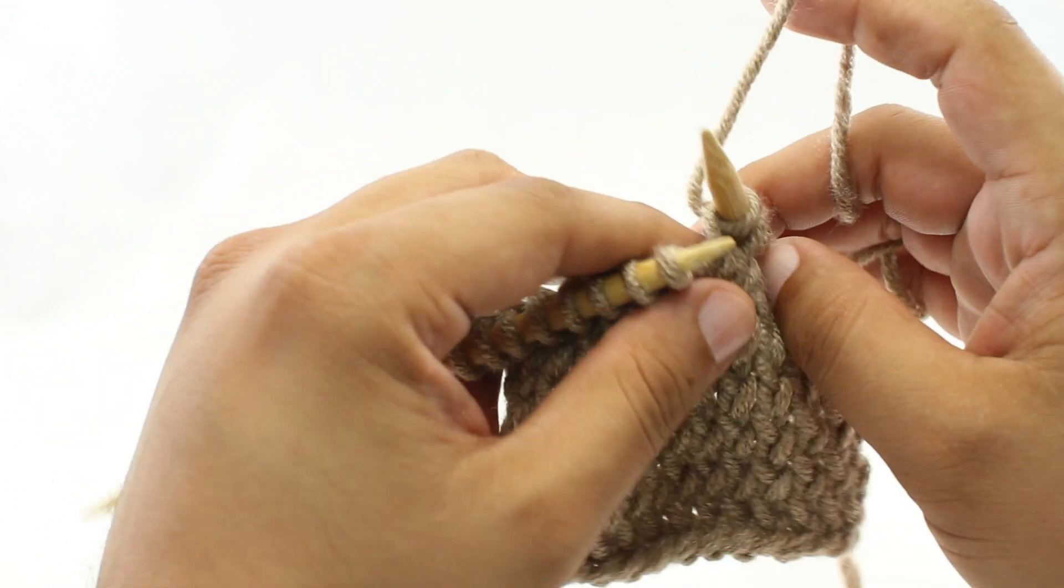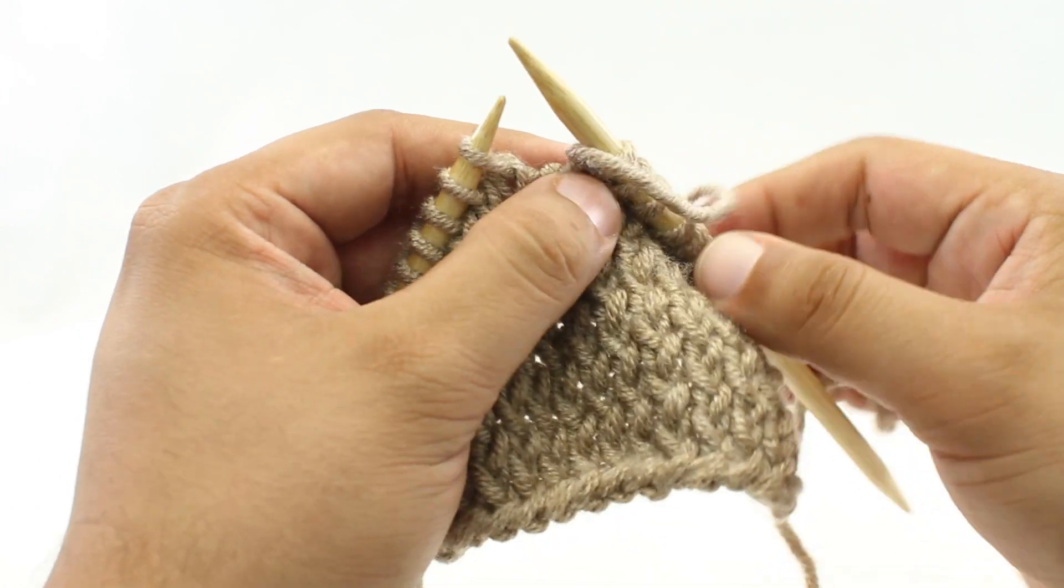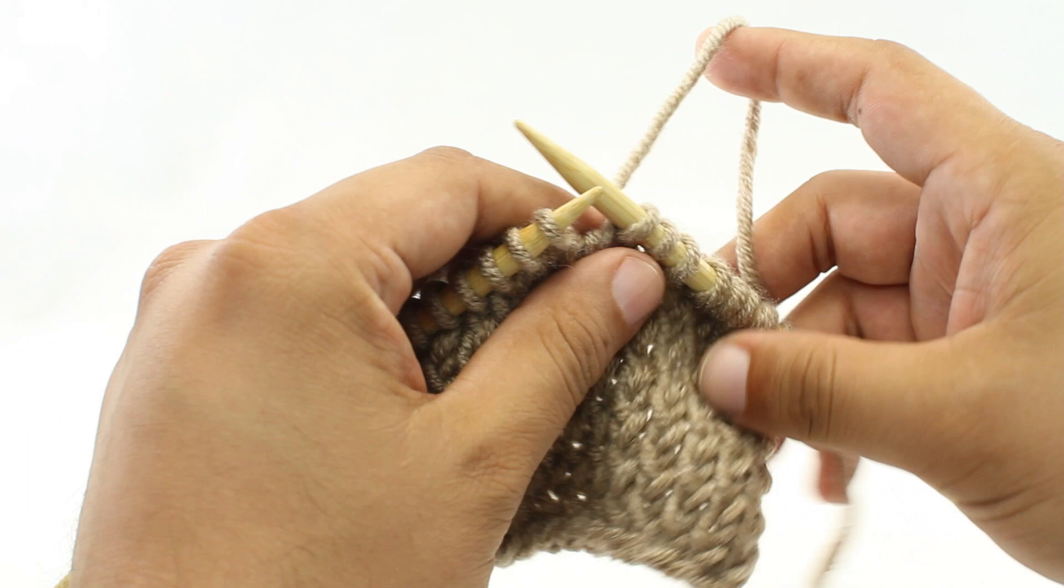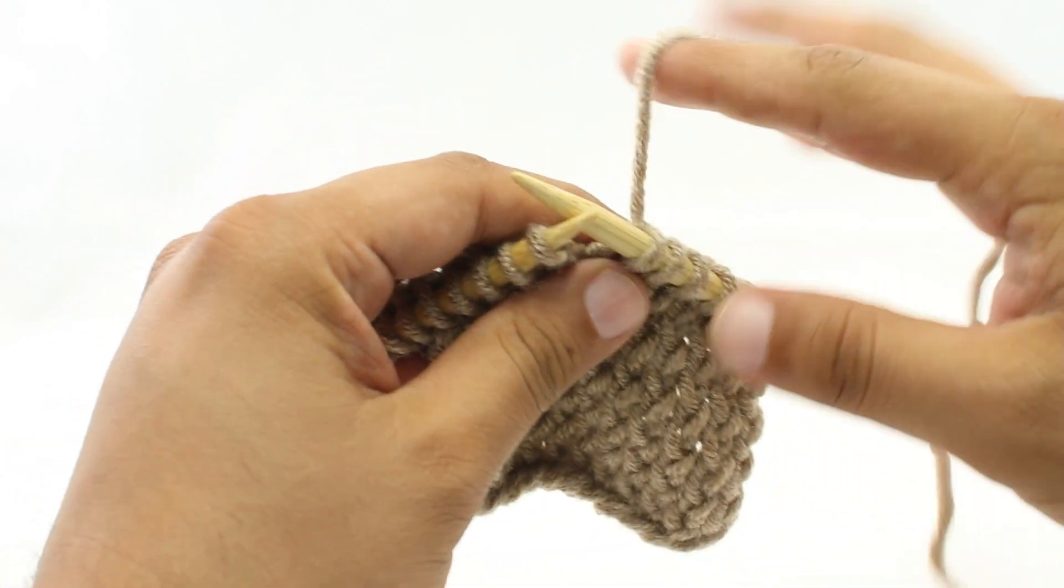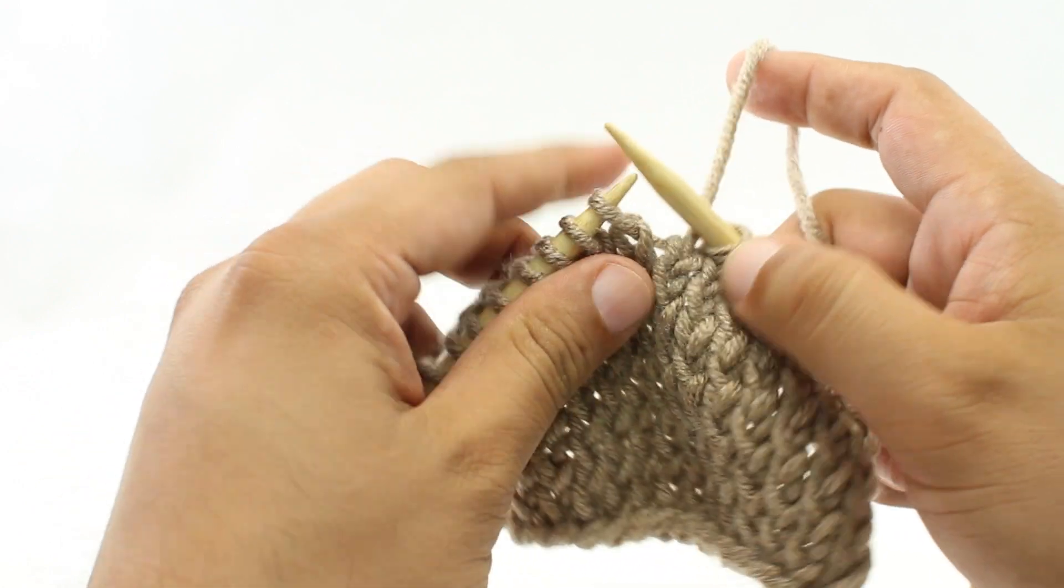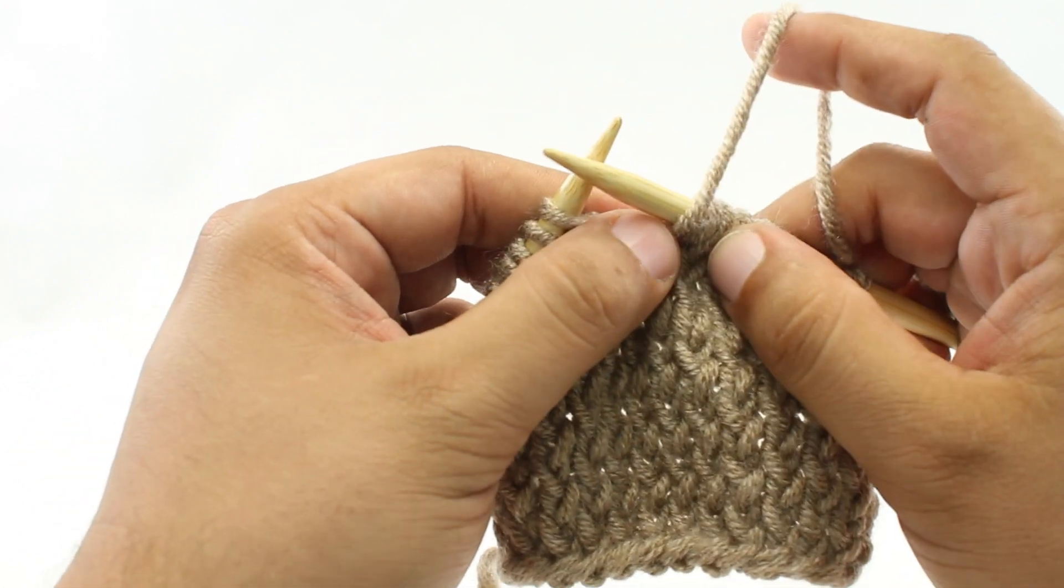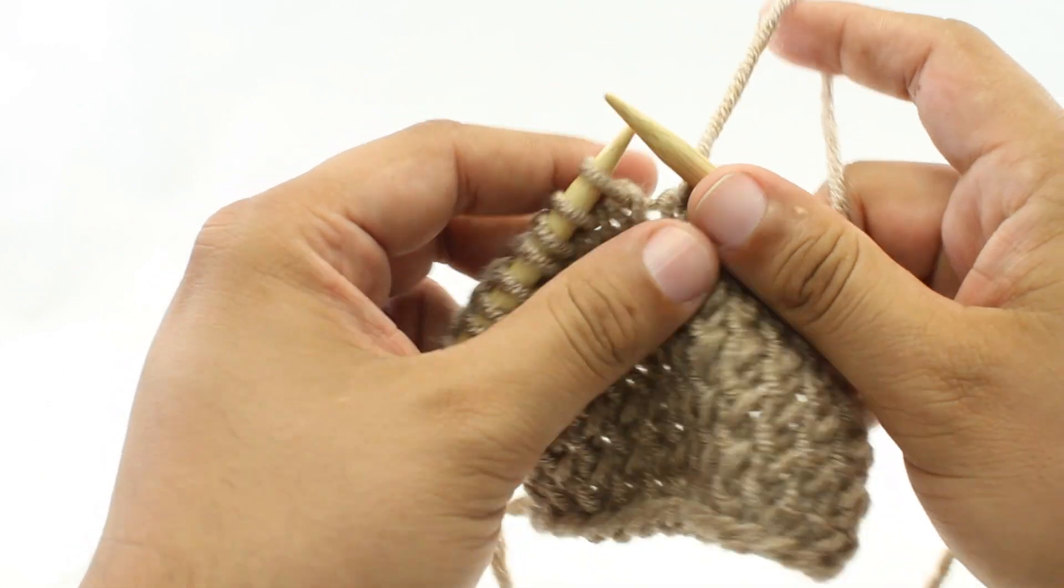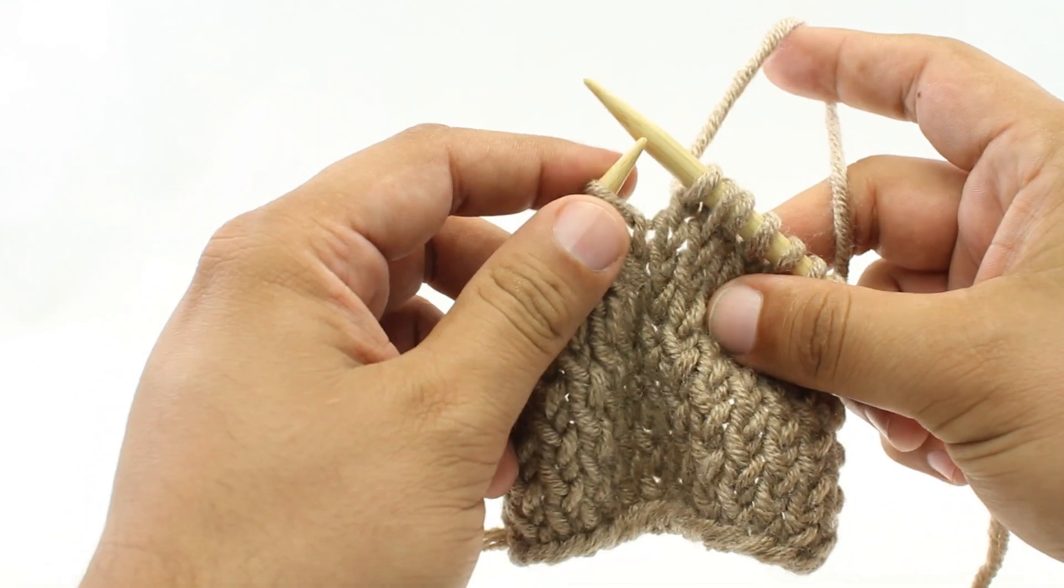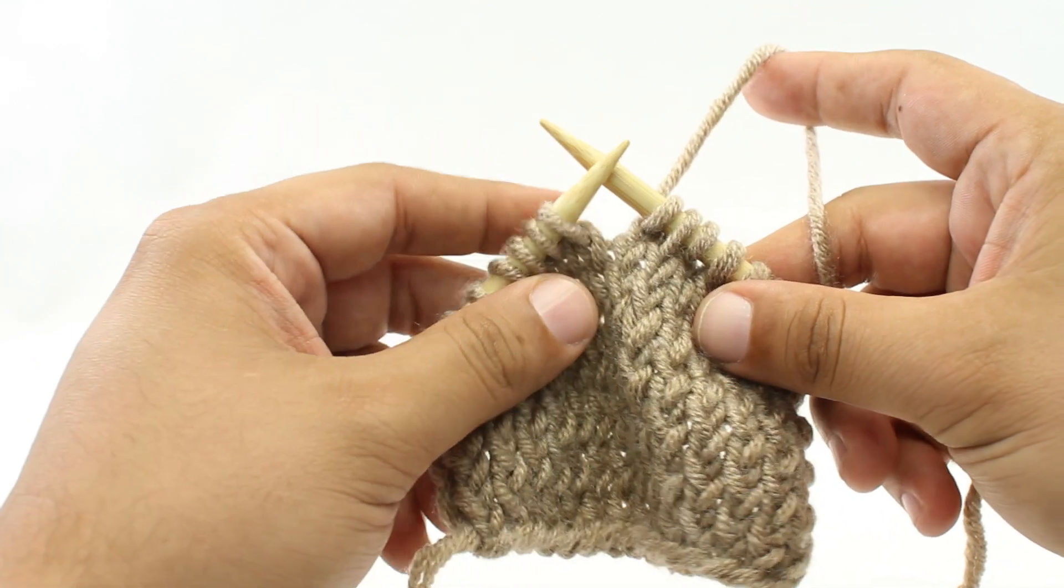Now sometimes you may have the yarn in front of your work and you need to move it to the back. That's the other situation where with yarn in back would become useful. So you're maybe purling something and then the pattern will say with yarn in back and then you'll do something else in the pattern. So that's what WYIB stands for: with yarn in back.